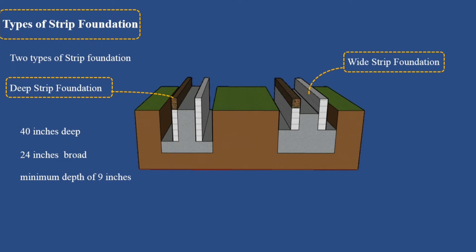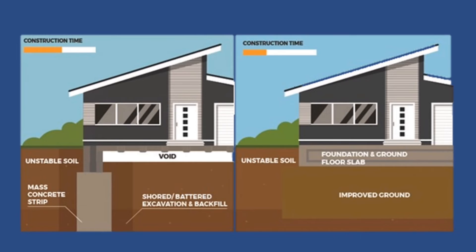Wide strip foundation is used in areas with soils of low load-bearing capacity, where regular strip foundation cannot be implemented. Excessive widening and deepening to prevent wall shearing is not economically justified in such soils. Instead, the use of reinforced concrete is a proper solution, as reinforcing bars give the foundation tensile properties, allowing the entire structure to bear strain and compression.